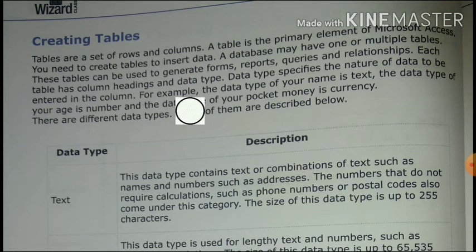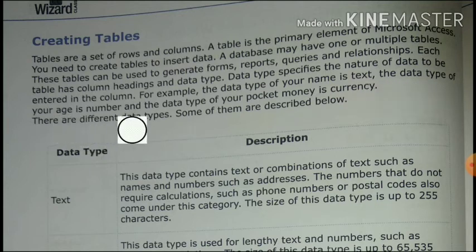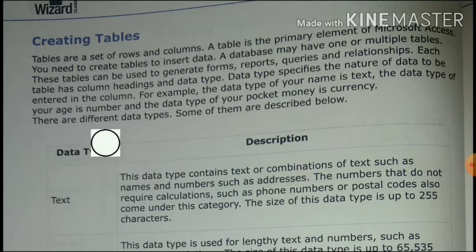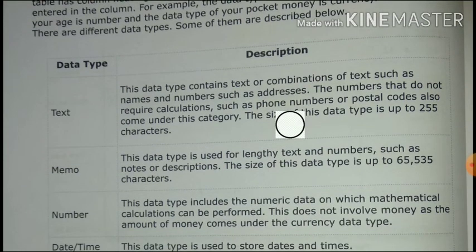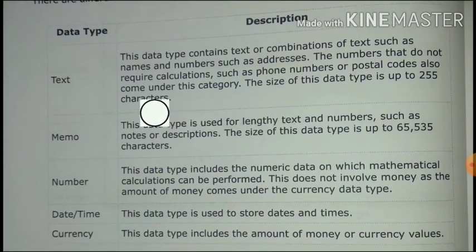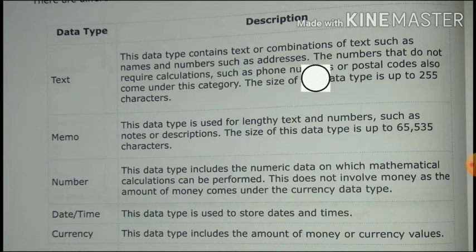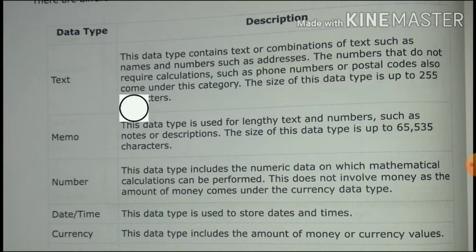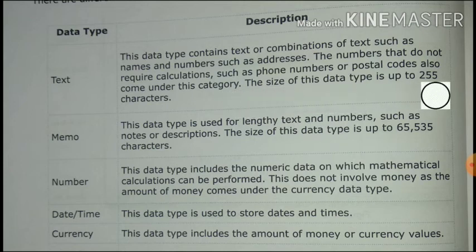A data type specifies the nature of data to be entered in a column. For example, the data type of a name is Text, the data type of age is Number, and the data type of pocket money is Currency. There are different types of data types. The first is Text — this data type stores text or a combination of text and numbers such as names and addresses, and numbers that do not require calculation such as phone numbers or postal codes. The size of this data type is up to 255 characters.